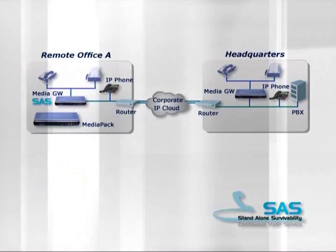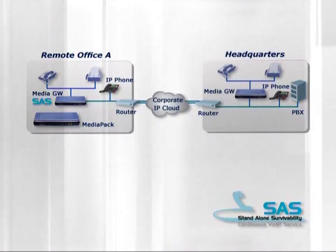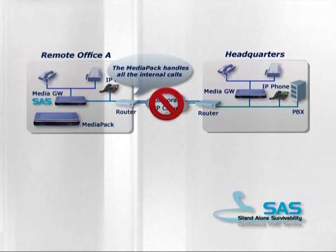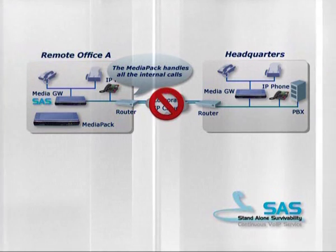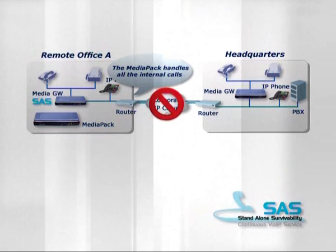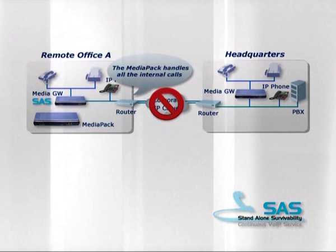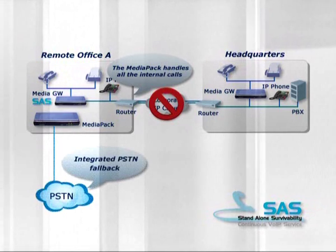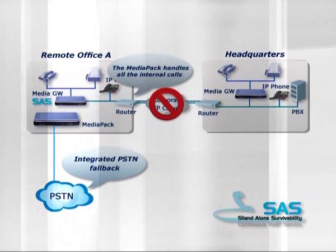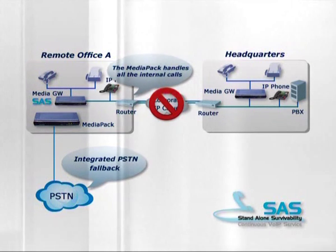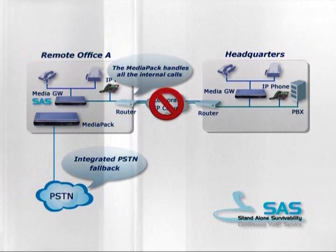With regard to reliability and survivability, the MediaPak includes the SAS stand-alone survivability feature. This unique feature enables the gateway to provide local telephony services even if the WAN connectivity is lost. This key feature increases the reliability of the VoIP system and provides a real telephony survivability option to remote offices, small and medium enterprises, or any application that relies on WAN connectivity or SIP trunking for its telephony services. In addition, the MediaPak includes an integrated PSTN fallback and lifeline system that enables continuous telephony services and emergency calls in case of power failure.